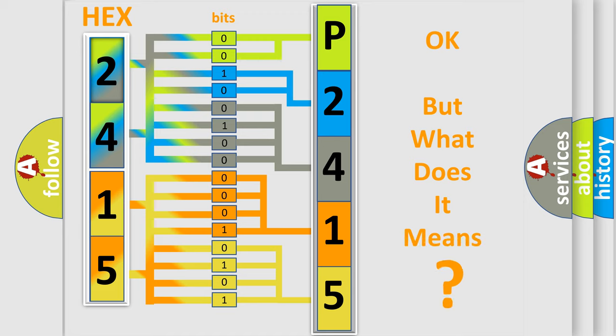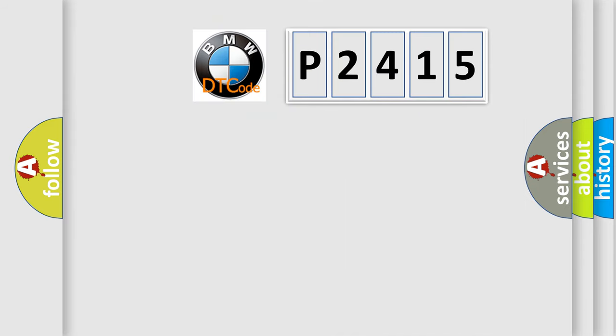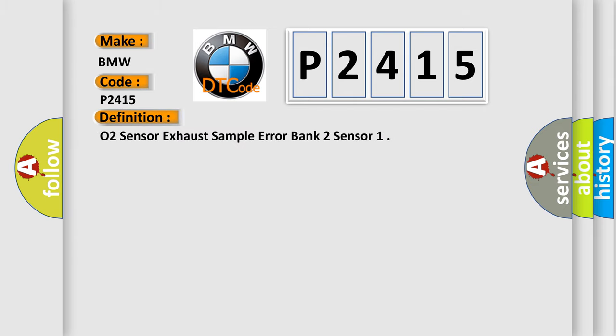The number itself does not make sense to us if we cannot assign information about what it actually expresses. So, what does the diagnostic trouble code P2415 interpret specifically for BMW car manufacturers? The basic definition is: O2 sensor exhaust sample error bank 2 sensor.